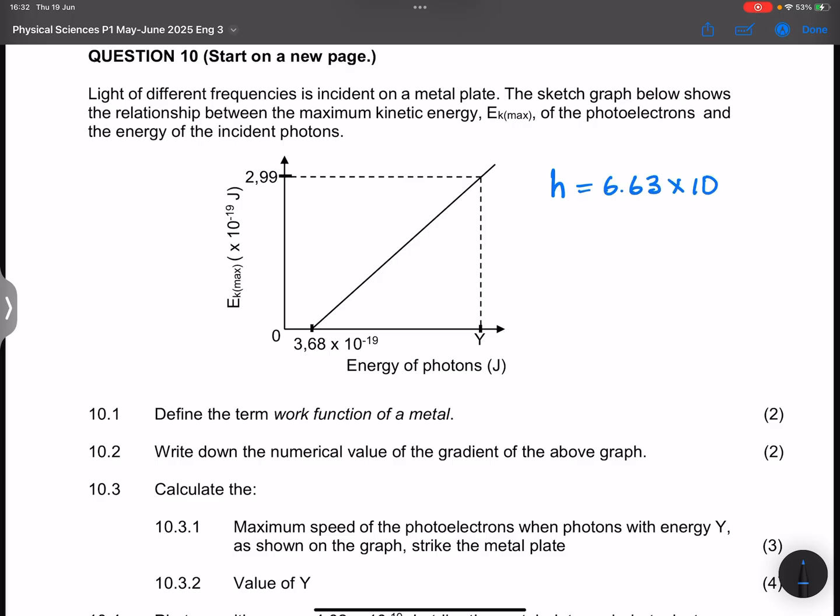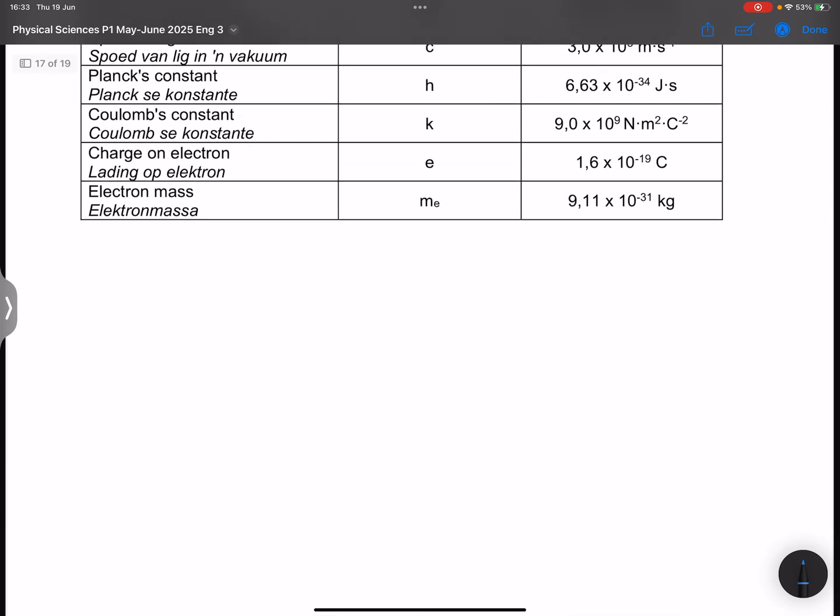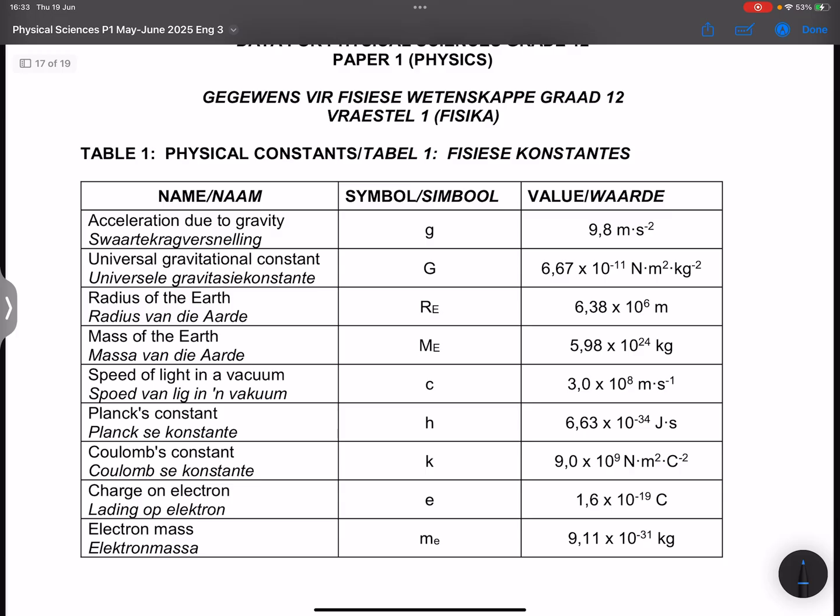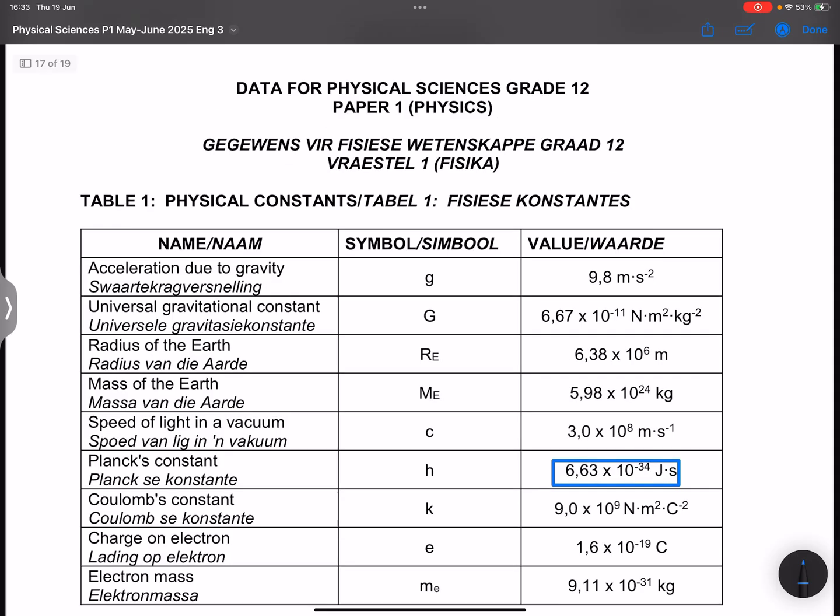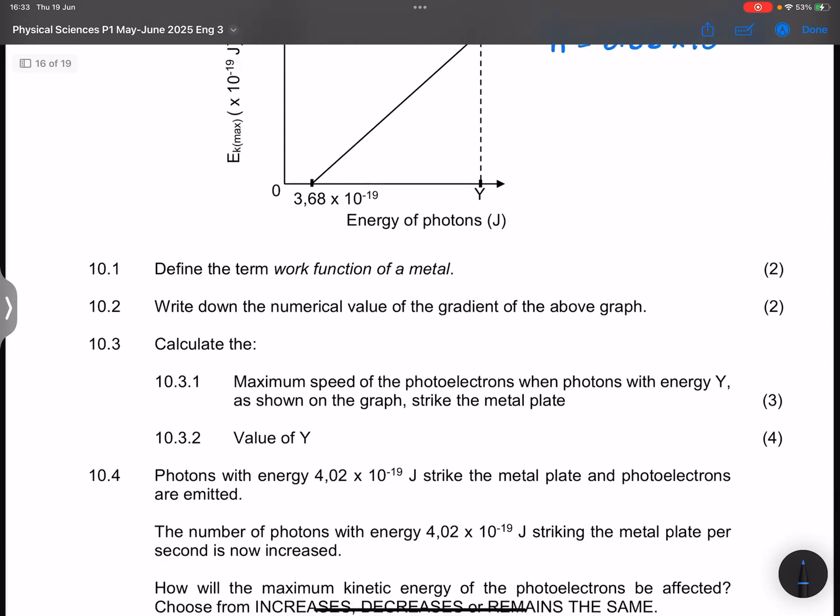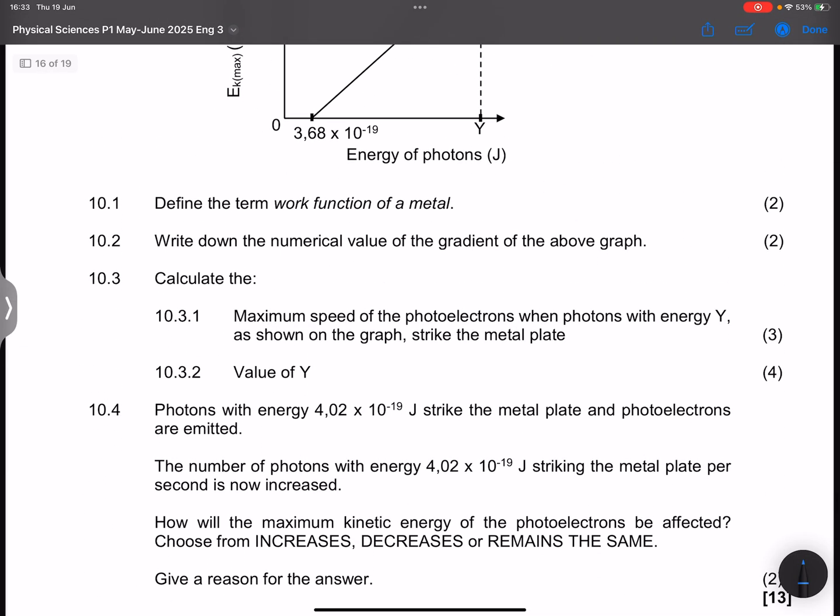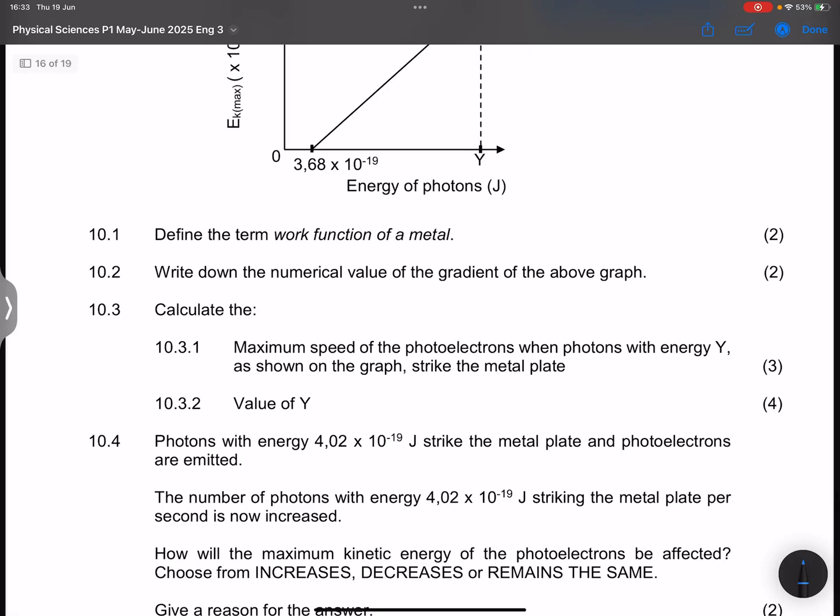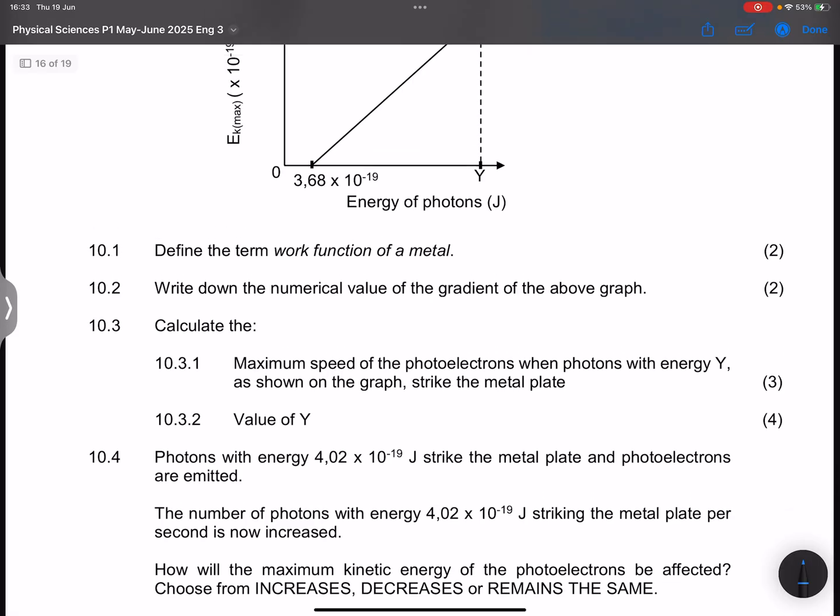If you don't remember it, you can always go and refer to your table of constants. It is exactly that value over there. Right, now let's go for the next question. They say calculate the maximum speed of the photoelectron when photons with energy Y, as shown in the graph, strike the metal plate.